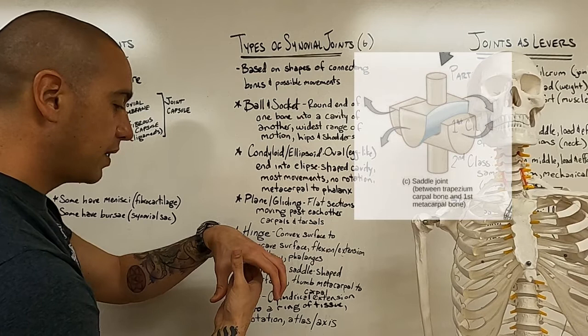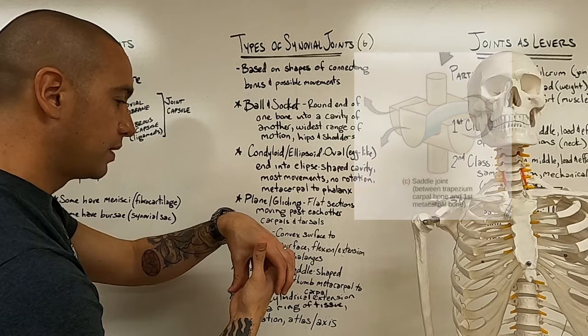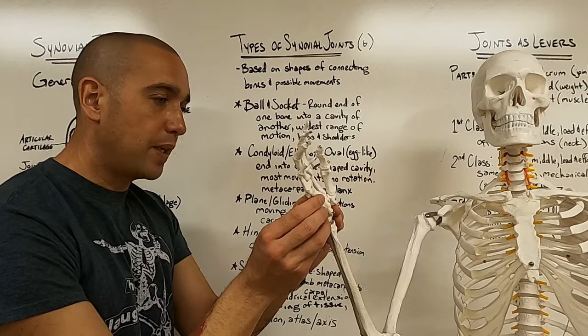In a saddle joint you've got two saddle shaped surfaces and they can go in one plane and in the other, but again no rotation. The thumb metacarpal to its carpal is that type here.